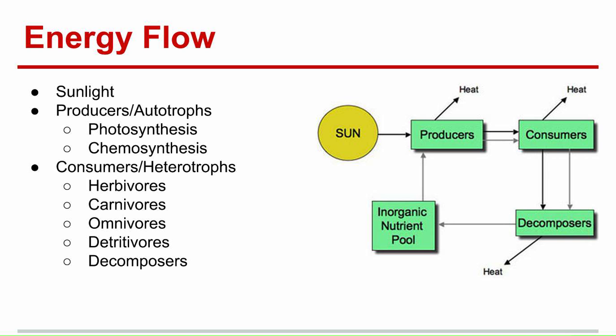Consumers are made up of five different groups. There are herbivores, which only eat plants; carnivores, which only eat meat; and omnivores, which eat both plants and meat. There are also detritivores, which feed on plant and animal remains. These consist of mites, earthworms, snails, and other similar organisms. And then there are decomposers, which break down organic matter - these are bacteria and fungi.